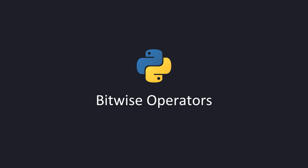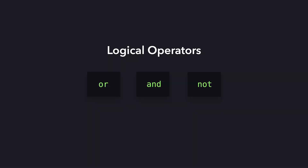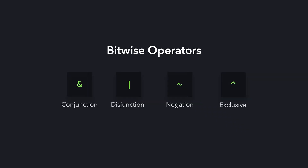So far, we've seen the AND, OR, and NOT logical operators. Beside the logical operators, we also have bitwise operators. Bitwise operators allow you to manipulate single bits of data.